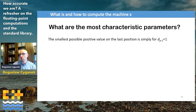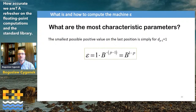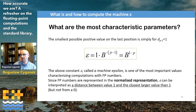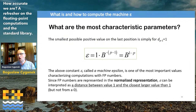The most important parameter is machine epsilon: the smallest positive value on the last bit position of the significand. But remember — epsilon is NOT the distance from zero; it is the distance from 1 to the next larger representable value. Epsilon is different for float, double, and long double. It appears frequently in numerical computations and is one of the most important constants to understand.